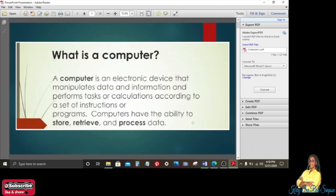The first thing we're going to be looking at is what is a computer. A computer is an electronic device that manipulates data and information and performs tasks or calculations according to a set of instructions or programs. In other words, computers have the ability to store, retrieve, and process data. And of course, when we talk about process data, we mean that it processes the data so that it becomes meaningful and then it becomes information.